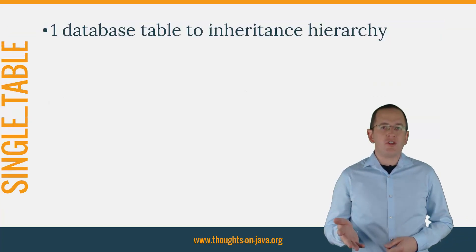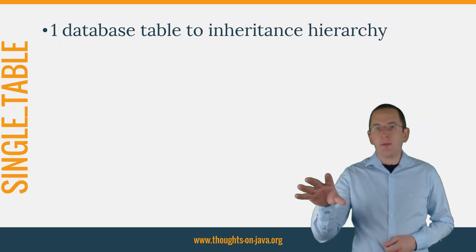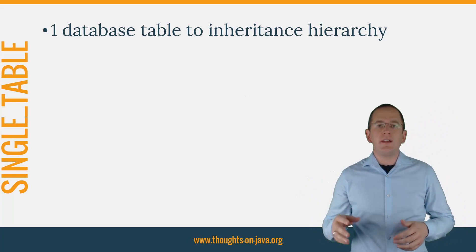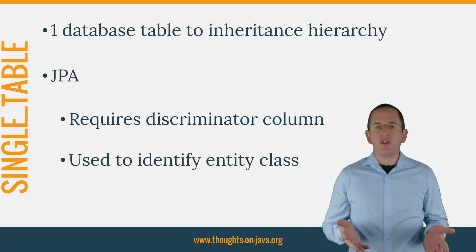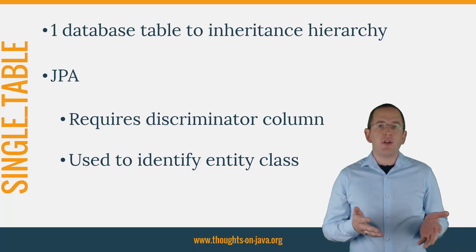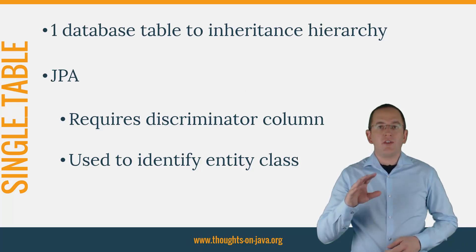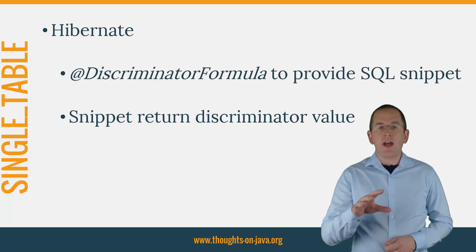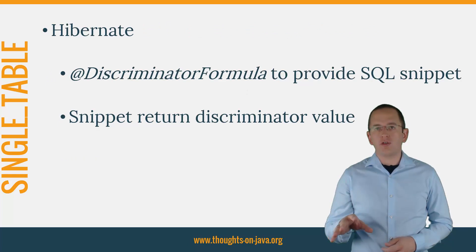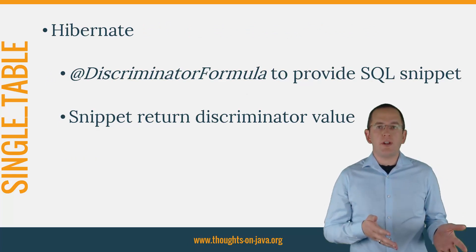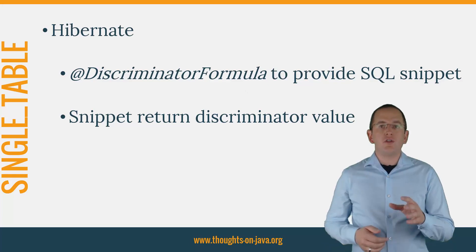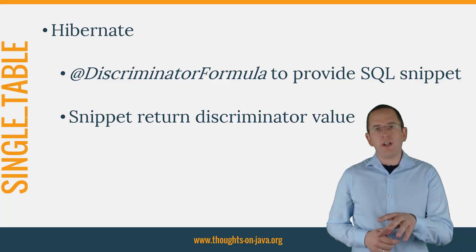The Single Table Strategy maps records from the same database table to different entity classes of an inheritance hierarchy. If you want to use this strategy with JPA, your database table needs to have a discriminator column. The value in this column identifies the entity class to which each record shall be mapped. By default, Hibernate uses the same approach, but if your database table doesn't contain a discriminator column, you can use the @DiscriminatorFormula annotation to provide an SQL snippet that returns the discriminator value.